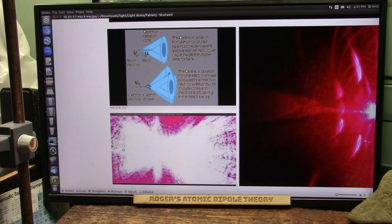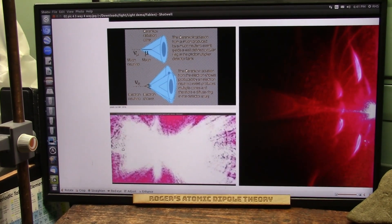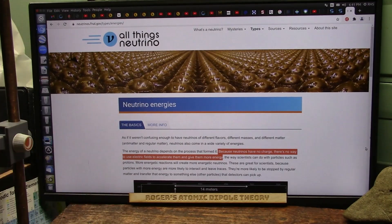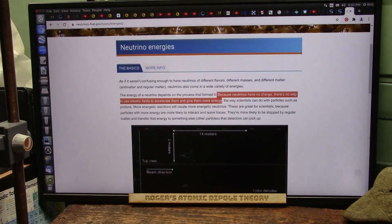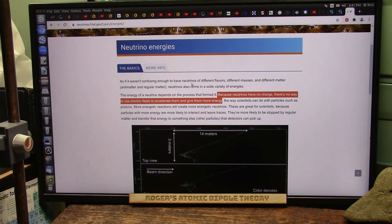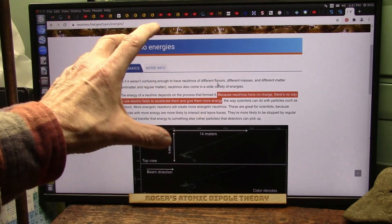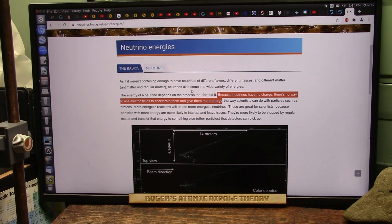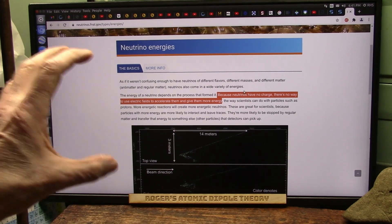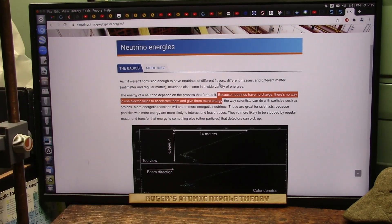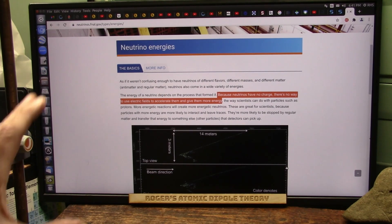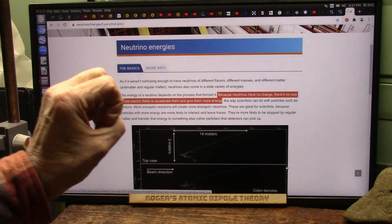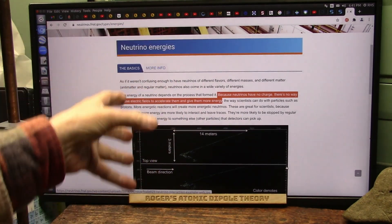Here's what they're claiming, which is totally wrong. This is their claim. Neutrino energies. It says neutrinos come in a wide variety of energies. The harder they push, the harder they shove it back. That's the energy. The energy of a neutrino depends on the process that formed it. No, it doesn't. Well, yes, it does.